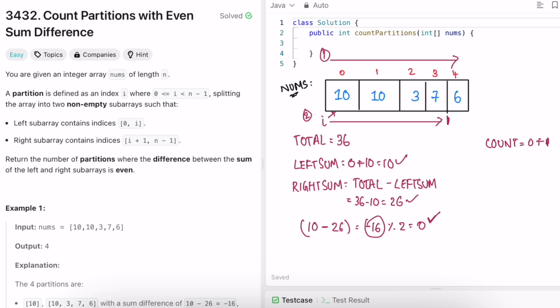The next iteration, to the left sum, you add the second partition. Now i will be here. Add that to left sum which is equal to 20. Total is 36. Left sum is 20 which makes right sum equal to 16. Now we have to do left sum minus right sum again. Left sum is equal to 20, right sum is equal to 16. This difference is 4. Check if this 4 is even. Yes, it is even. So increment count.